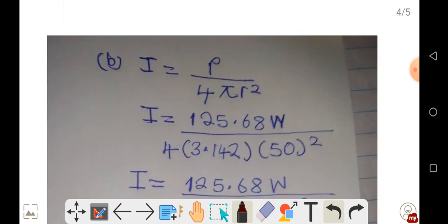Let's look at question B. Intensity equals power over 4 pi r squared. Power we computed to be 125.68, which we have substituted here. The distance was 50 meters. Then this is the pi value.